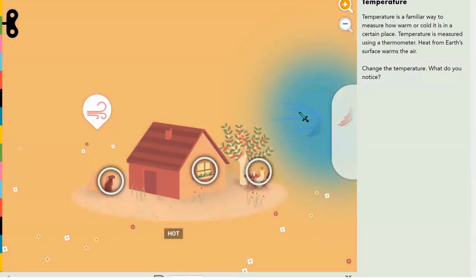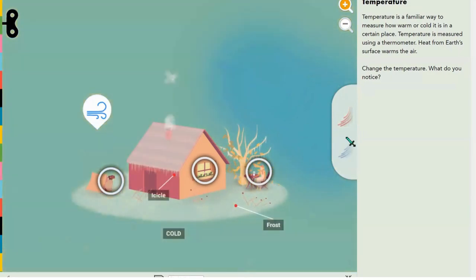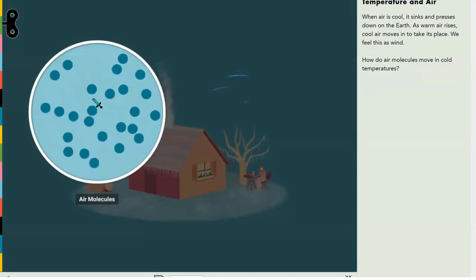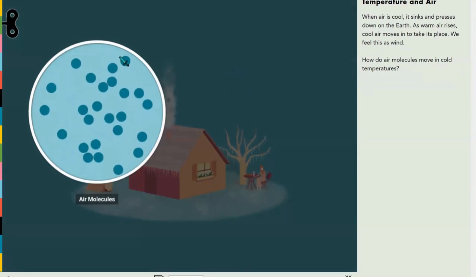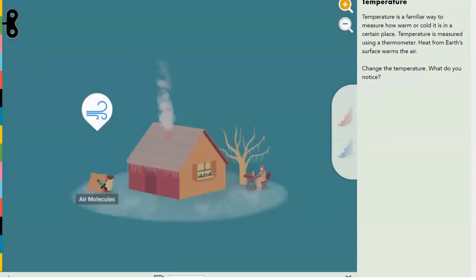But if we make it cold, let's spot a difference. I guess we can see that the trees start to shed their leaves. It becomes cold, and when the air is cold, guess what? The molecules don't move as fast.